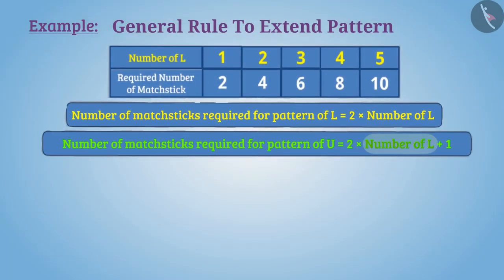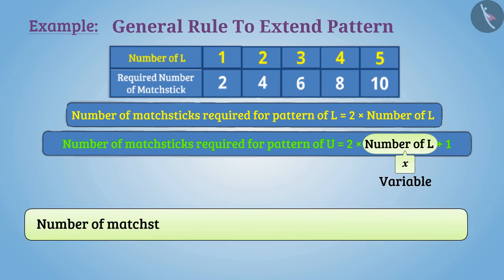Here the number of L can change, so this is a variable. Let us use letter x instead of number of L. With this, we can write number of matchsticks required for pattern of U is equal to two multiplied by x plus one, or 2x plus 1. This is the answer for the given question.